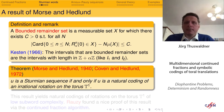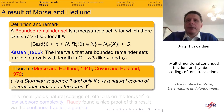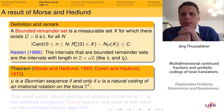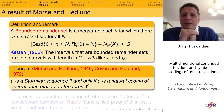Now let me come to a classical result that forms the basis of the theory we developed. This is due to Morse and Hedlund in 1940 and Coven-Hedlund some 30 years later. The result says that u is a Sturmian sequence if and only if u is a natural coding of an irrational rotation on the torus. So on one side you have a combinatorially defined sequence and on the other side you have dynamics, and these two are linked by this theorem of Morse and Hedlund.